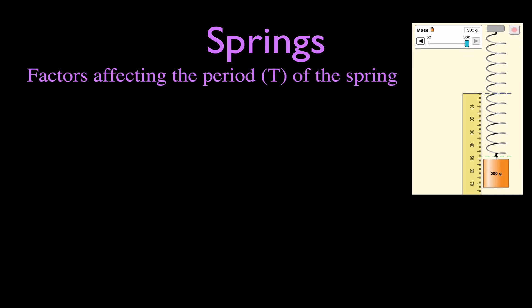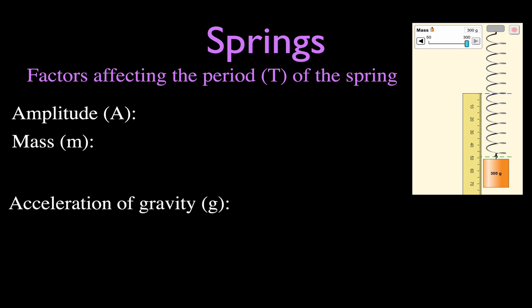There are four things we're going to look at with the simulation: the amplitude — how far we pull the spring back; the mass on the spring; the acceleration due to gravity, G; and the spring constant, K, from Hooke's Law.